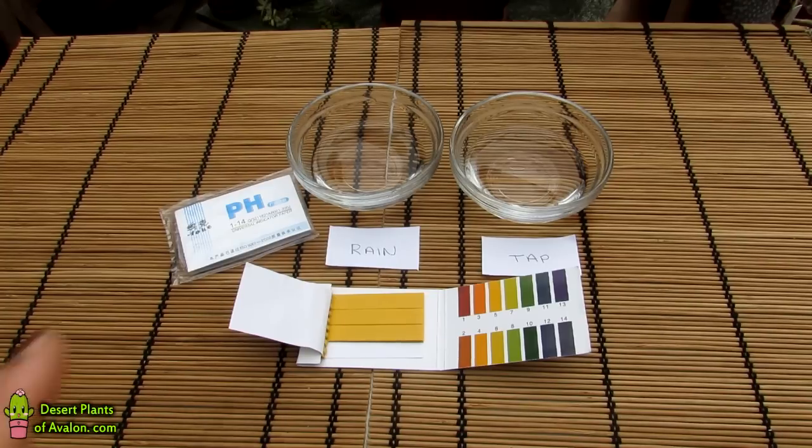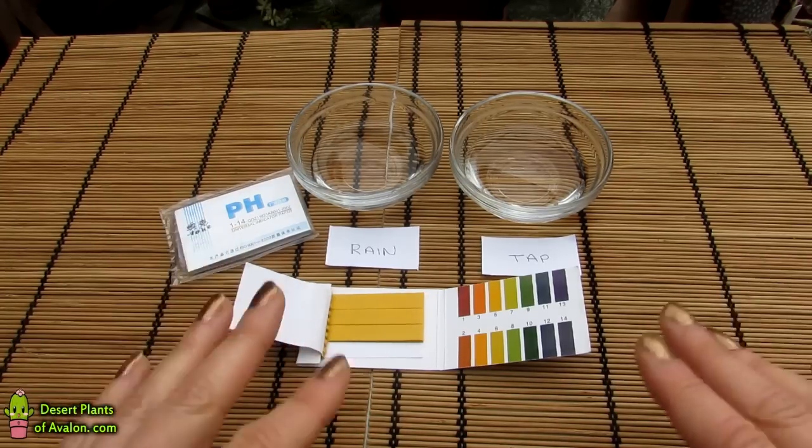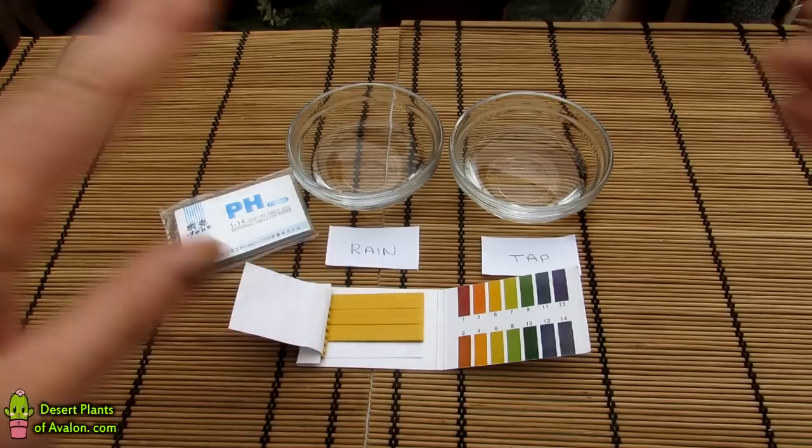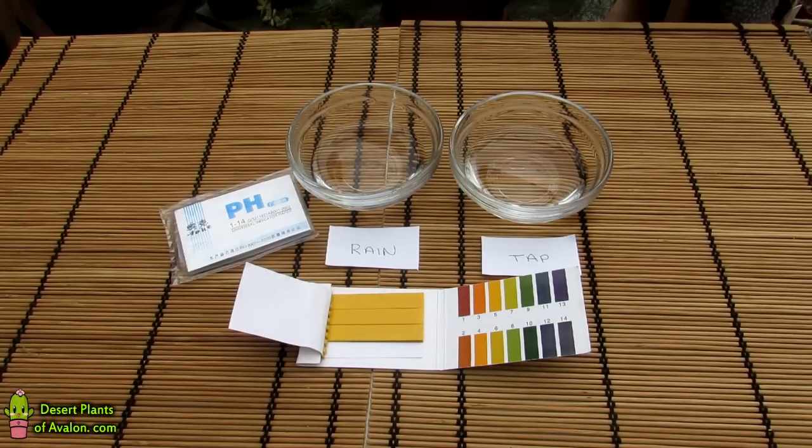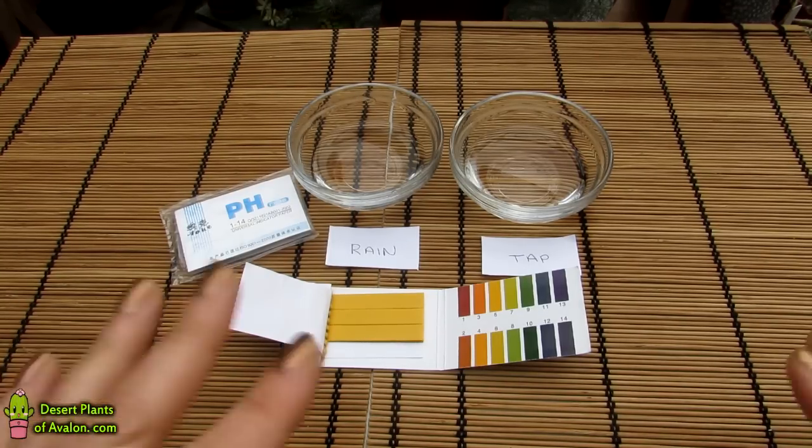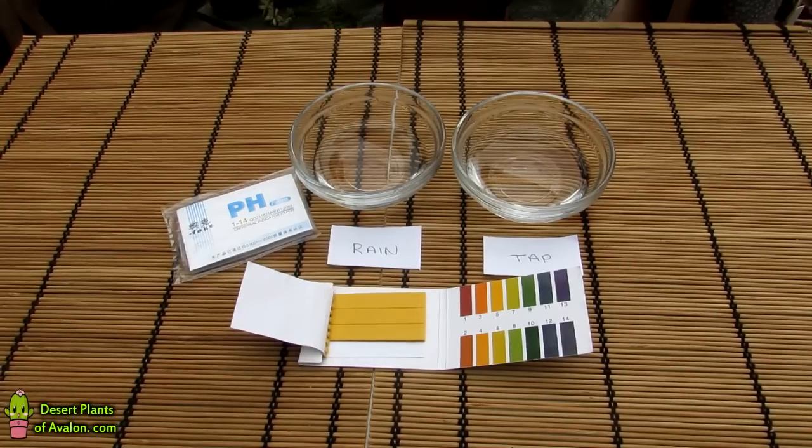I've made an entirely separate video on how to water your cacti and succulent plants, so I'm not going to go into detail in this video. Link is up above—please do check that out. This is purely about the pH. As I said, the ideal pH is between 5.5 to 6.5.